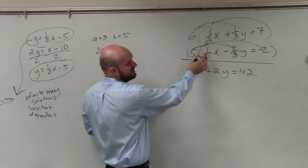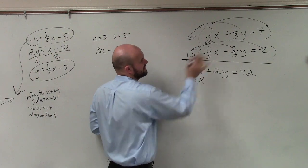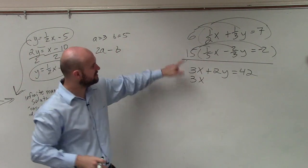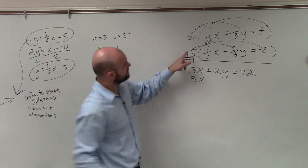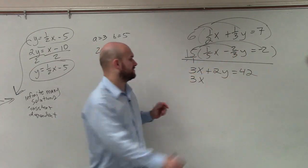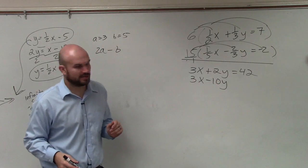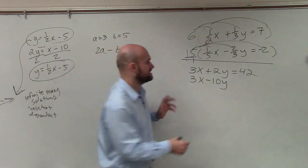Then I do this one. 15 times one-fifth x is going to be 3x. 15 times negative two-thirds, just multiply over. 15 times negative 2 is negative 30. 1 times 3 is 3. So negative 30 divided by 3 is negative 10. Follow me? Do you want me to show that? OK. 15 times negative 2 is equal to negative 30.